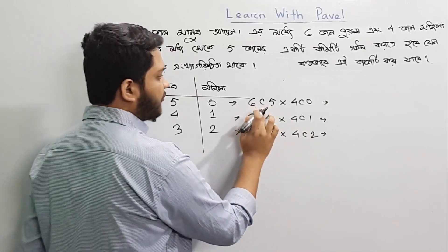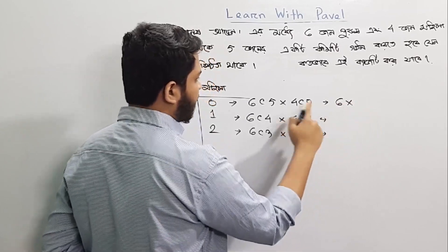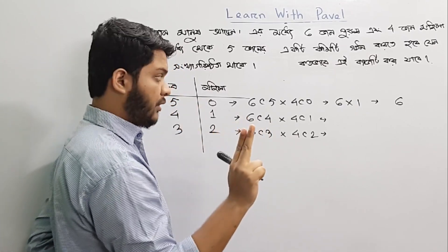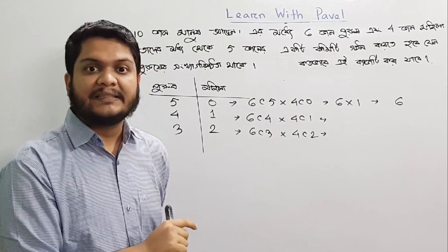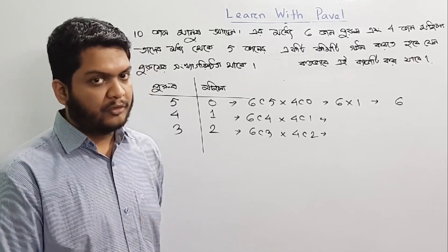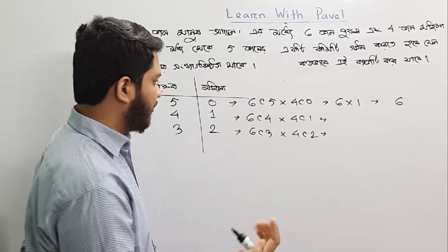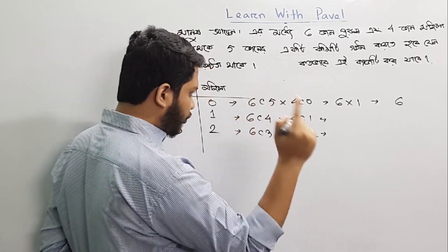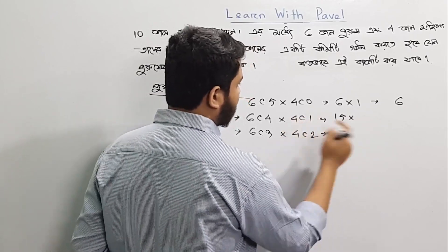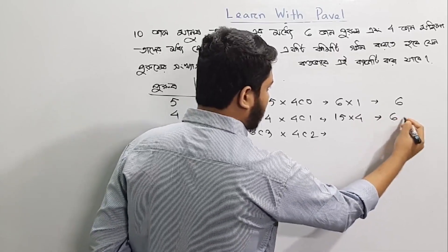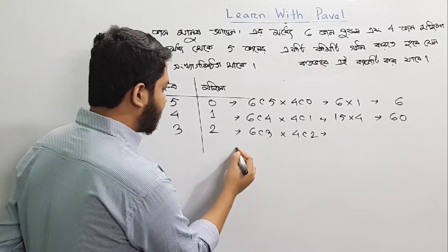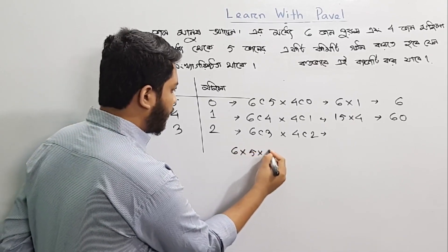So 65 is 6C1. 6C1 means 6. 4C0 means 1. 6C4 means 6C2. So 6C2 is fixed. So 64 means 6C2 means 4C1. nC1 means n. 4C1 means 4. 6C3 — so 6C3 is fixed.